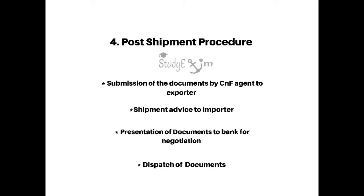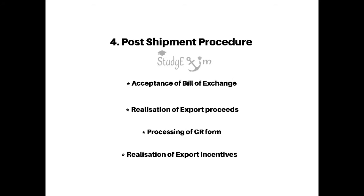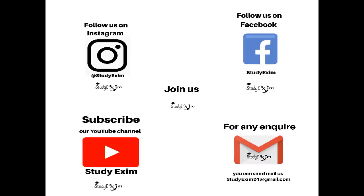Fourth, post-shipment procedure includes submission of documents by C&F agent to exporter, shipment advice to importer, presentation of documents to bank for negotiation, dispatch of documents, acceptance of bill of exchange, realization of export proceeds, processing for GR form, and realization of export incentive.